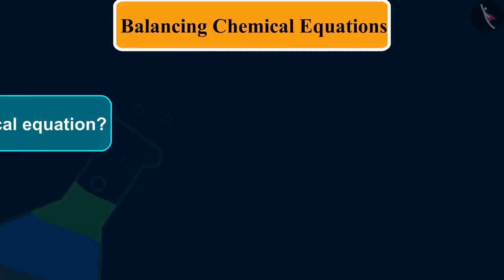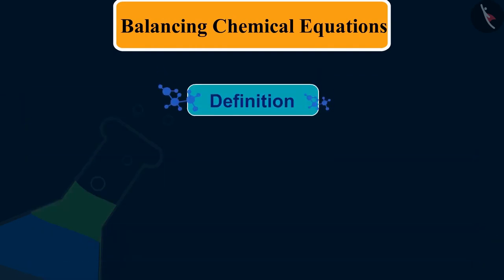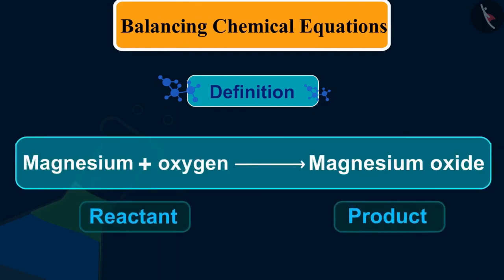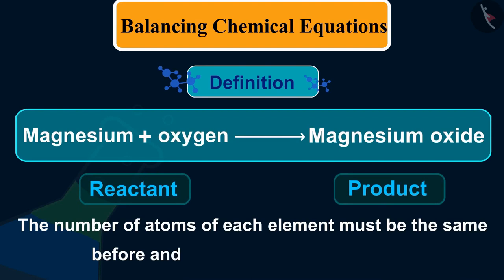First we will understand what is the meaning of a balanced chemical equation. A balanced chemical equation is the one which has the same number of atoms of elements on both sides of the equation. That is, the total mass of the elements present in the products of a chemical reaction has to be equal to the total mass of the elements present in the reactants.